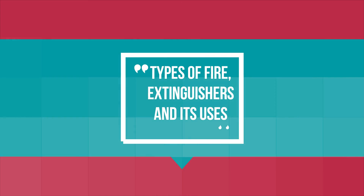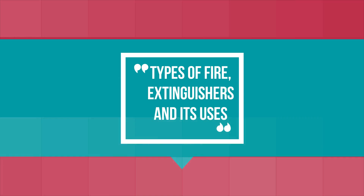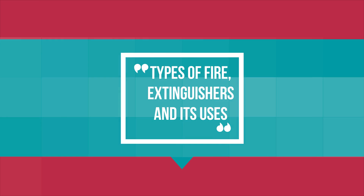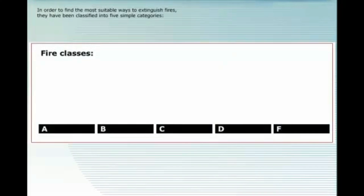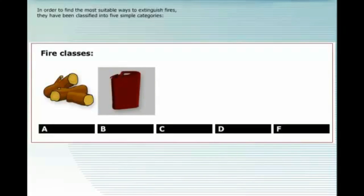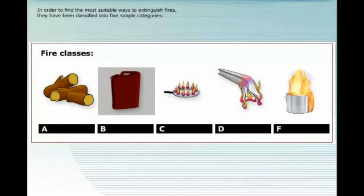Let us discuss types of fires, extinguishers, and their uses in order to find a more suitable way to extinguish fire. Fires have been classified into five simple categories: Class A for ordinary combustible material such as wood, paper, and cloth; Class B for oil and other flammable liquids; Class C for gases; Class D for fires in metals; and Class F, or Class K, for burning in cooking oil.